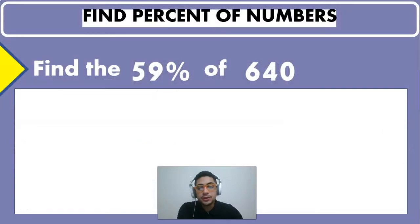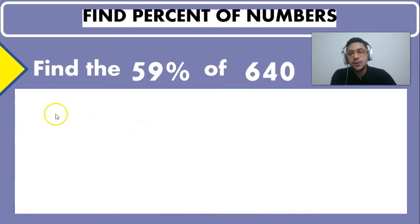So in order to find out guys the value we have to think of maybe two ways in which we can solve this problem. The first way or the first method we can use is that we can think of the formula that the part is going to be equal to the percentage multiplied by the whole.